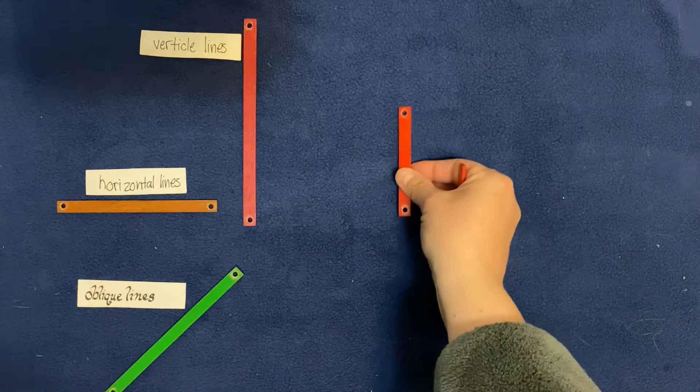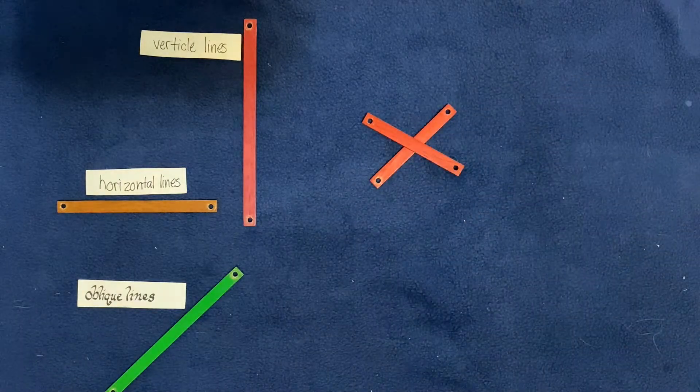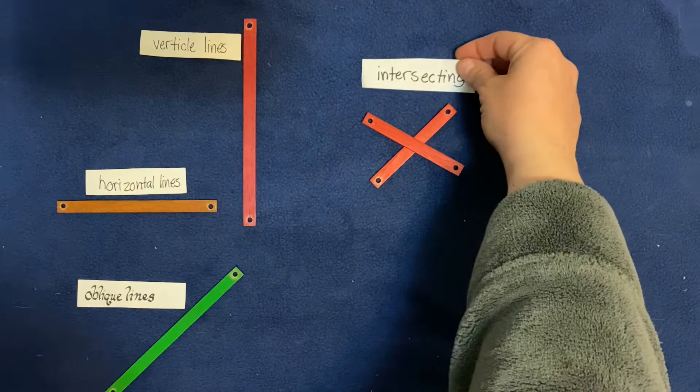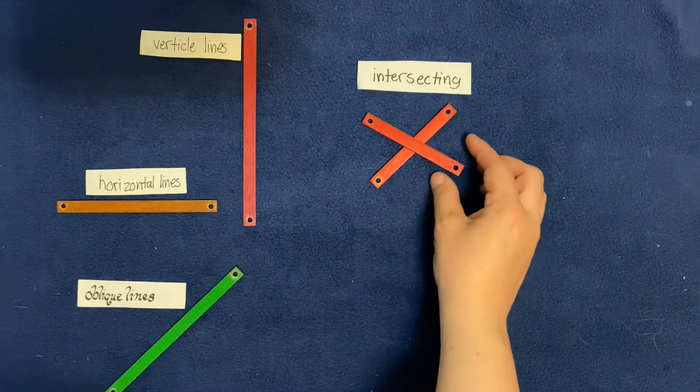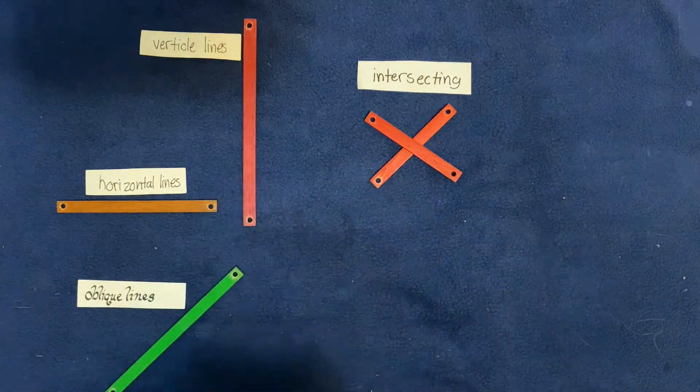Here I have two lines that are crossing one another. We call those intersecting lines. They are intersecting one another, kind of like an intersection, you know, when two roads come together, make a T, stop at a red light or a stop sign—intersecting lines.